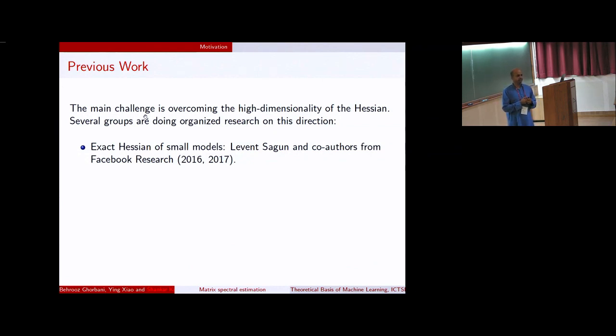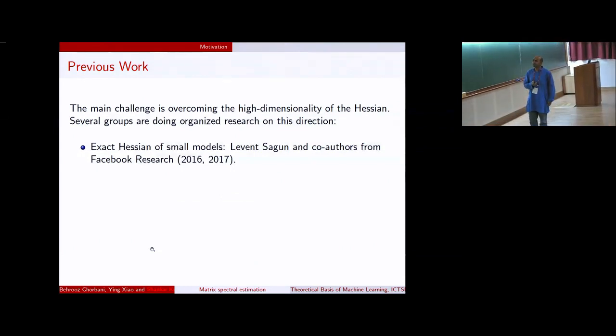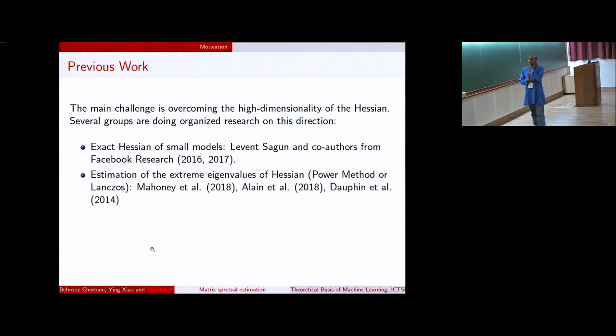A group in Facebook has been looking at this for some time, and they have published a few papers. What they have done over the past few years have been to look at very small MLPs, like multi-layer perceptrons, and looked at the exact Hessian, and then calculated the spectrum as it goes along during optimization. Another class of papers look at the extreme eigenvalues of the Hessian, typically using power method, and trying to argue something about where the parameters go as the optimization proceeds.